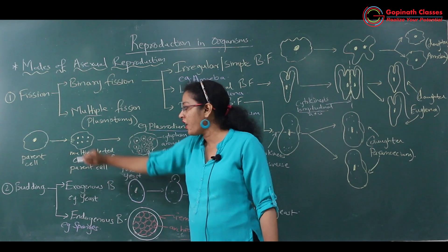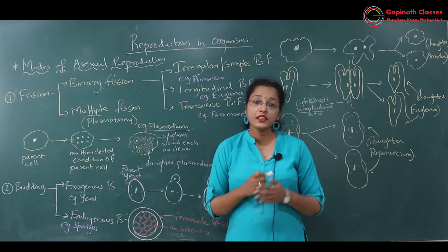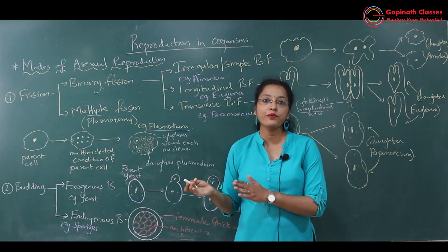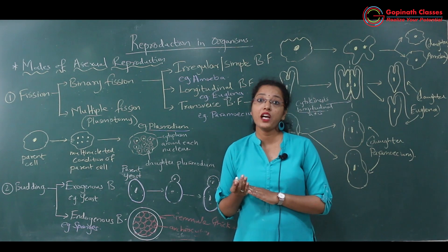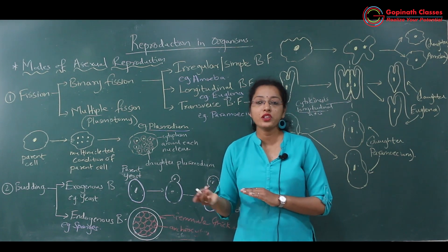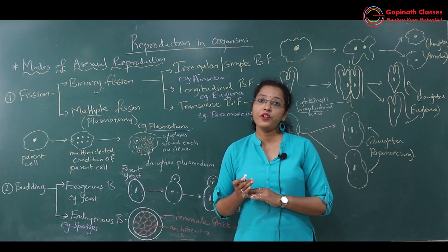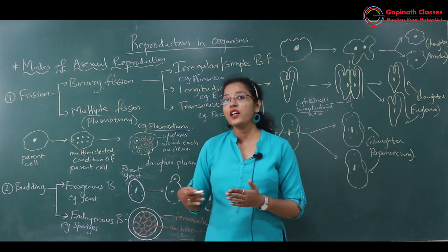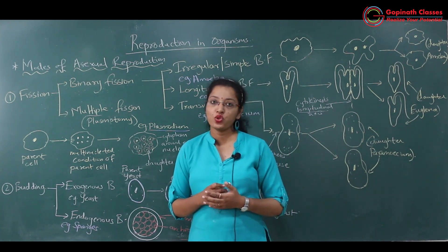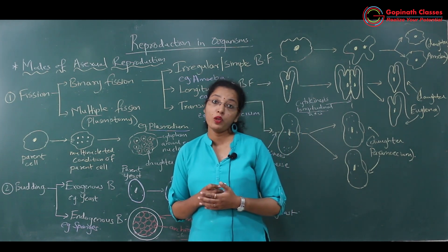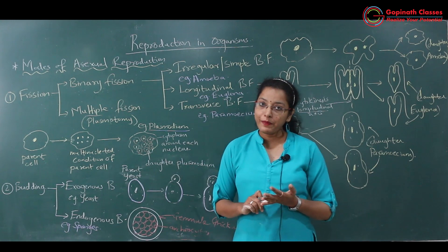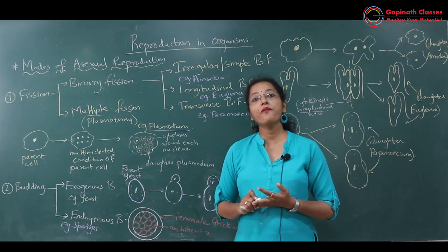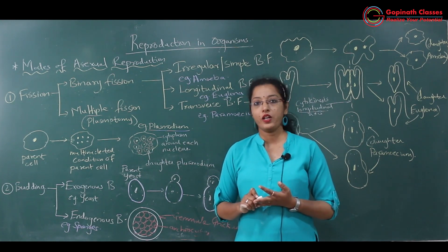In this session, we have studied two modes of reproduction: first is fission and second one is budding. There are still many different types of asexual reproduction which we are going to study in the next video lecture, including fragmentation, sporulation, spore formation, and vegetative reproduction. Thank you.